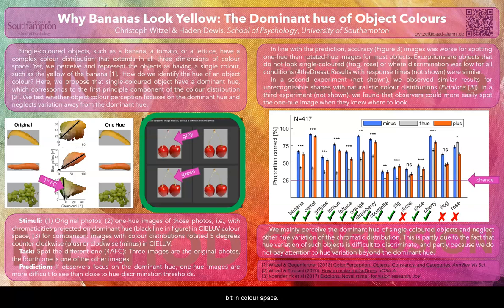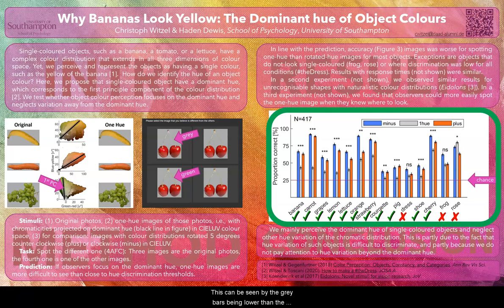This means that the object changes in its overall hue in a barely visible fashion. For most objects the one-hue version was still more difficult to distinguish from the original than the rotated hue version. This can be seen by the gray bars being lower than the blue and the red bars in the third figure.